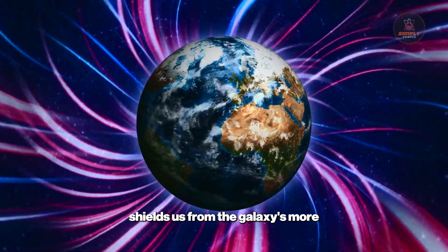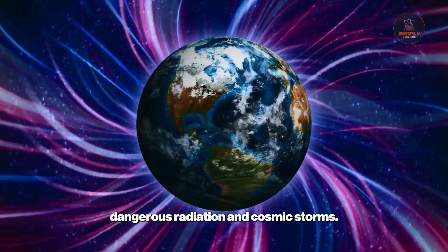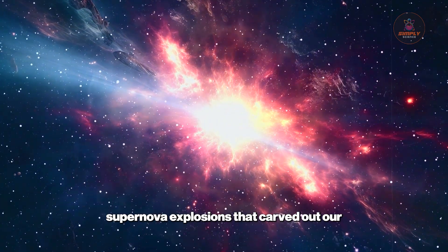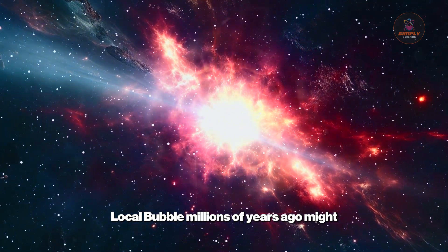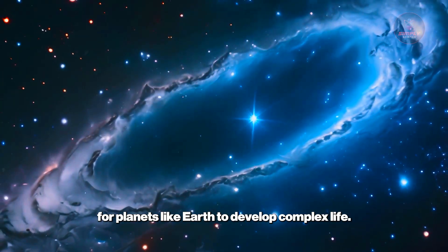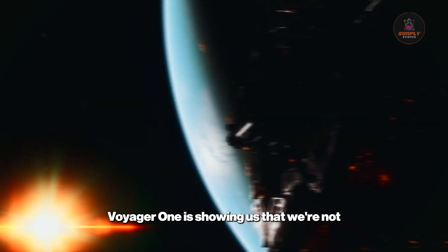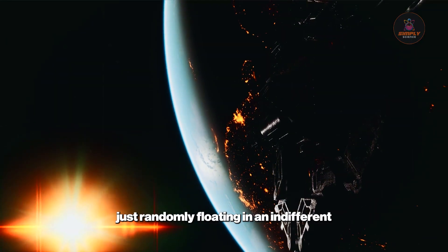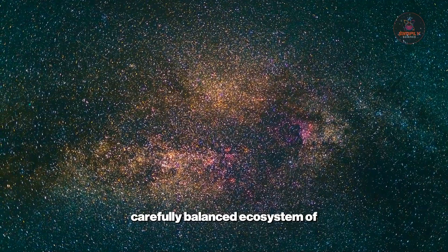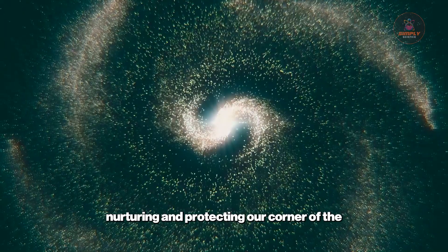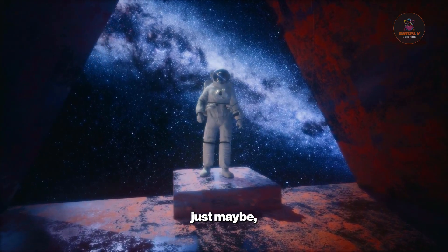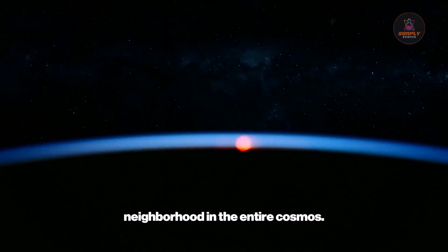The ancient supernova explosions that carved out our local bubble millions of years ago might have been the cosmic gardeners that prepared this region of space specifically for planets like Earth to develop complex life. Voyager 1 is showing us that we're not just randomly floating in an indifferent universe. We're nestled within this carefully balanced ecosystem of interstellar forces that have been nurturing and protecting our corner of the galaxy for eons, making us realize that maybe we're living in the most special neighborhood in the entire cosmos.